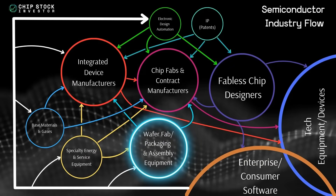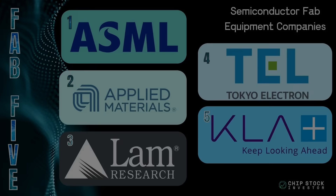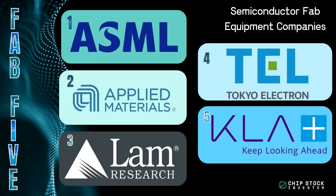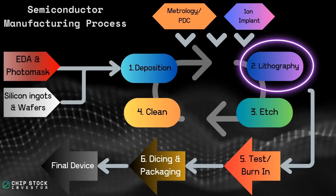Semiconductor industry flow. ASML fits into that wafer fab packaging and assembly equipment portion of the industry flow. ASML is the biggest of the fab five — they're at the top. They primarily fit into the lithography portion, that center process that gets repeated over and over again — oftentimes dozens and dozens of steps: deposition, litho, etch, clean. Rinse and repeat as those layers of the wafer are built up and subtracted to create tiny microscopic features for some sort of chip.